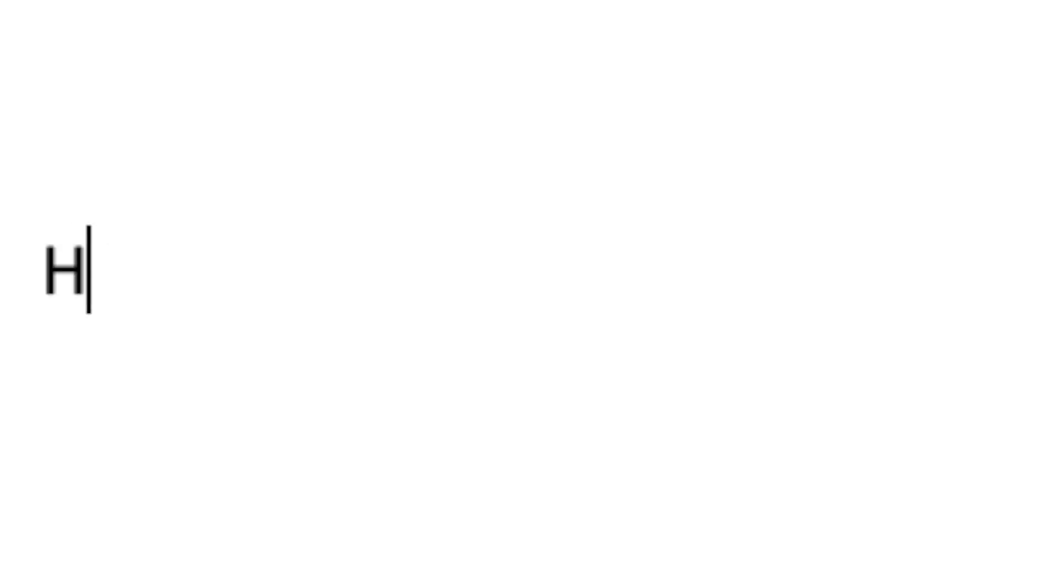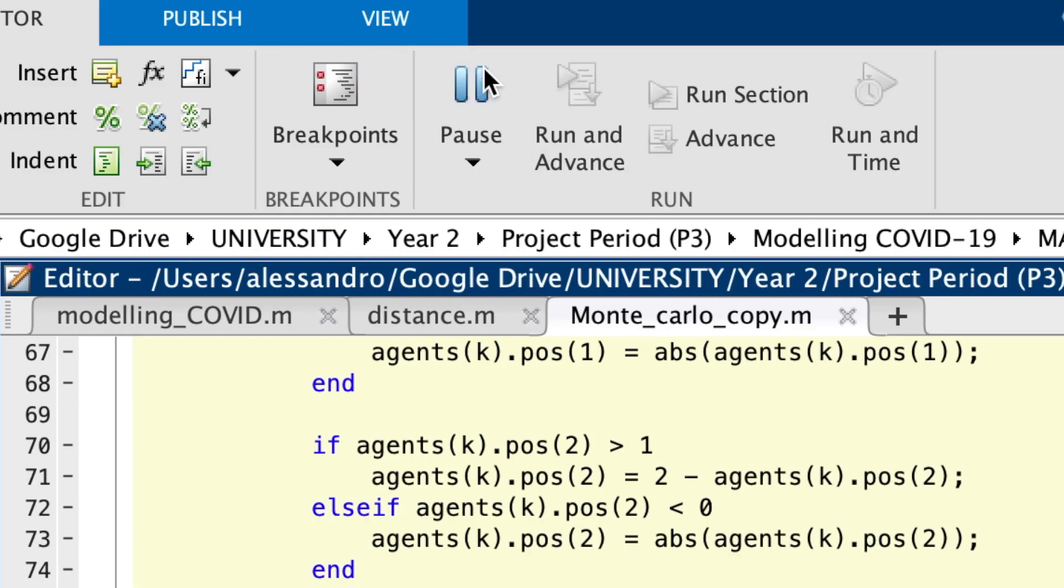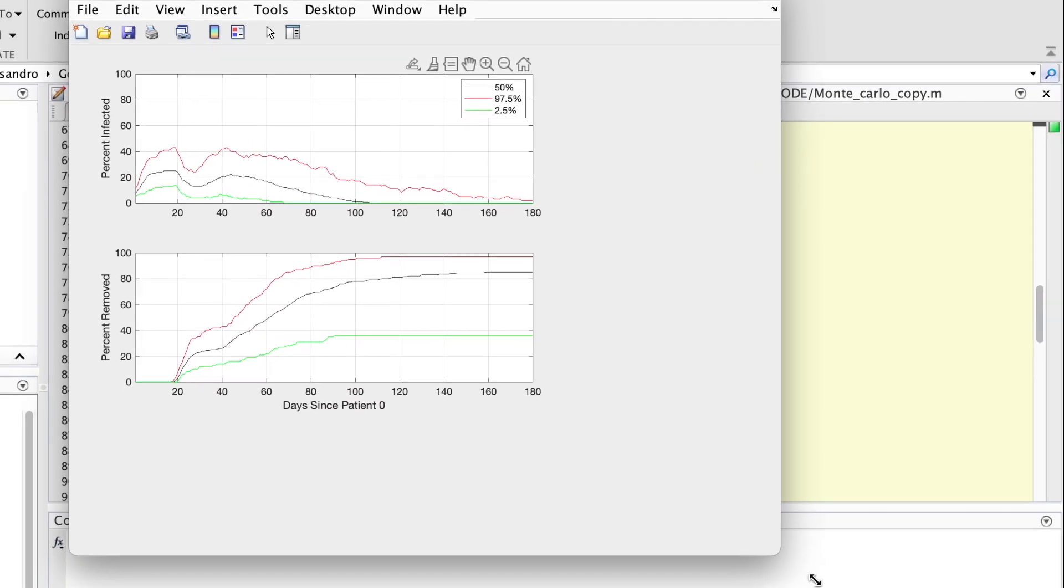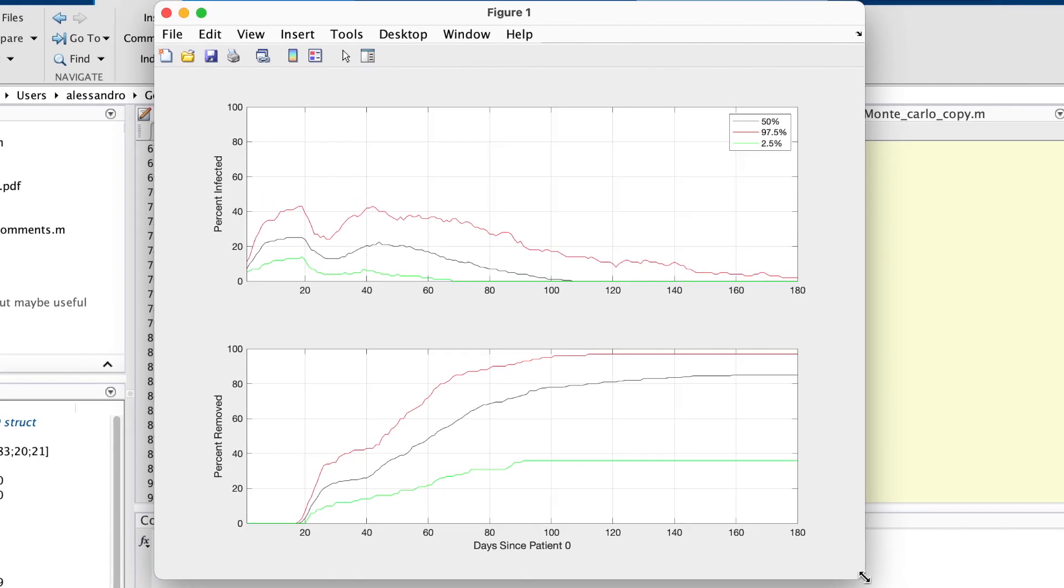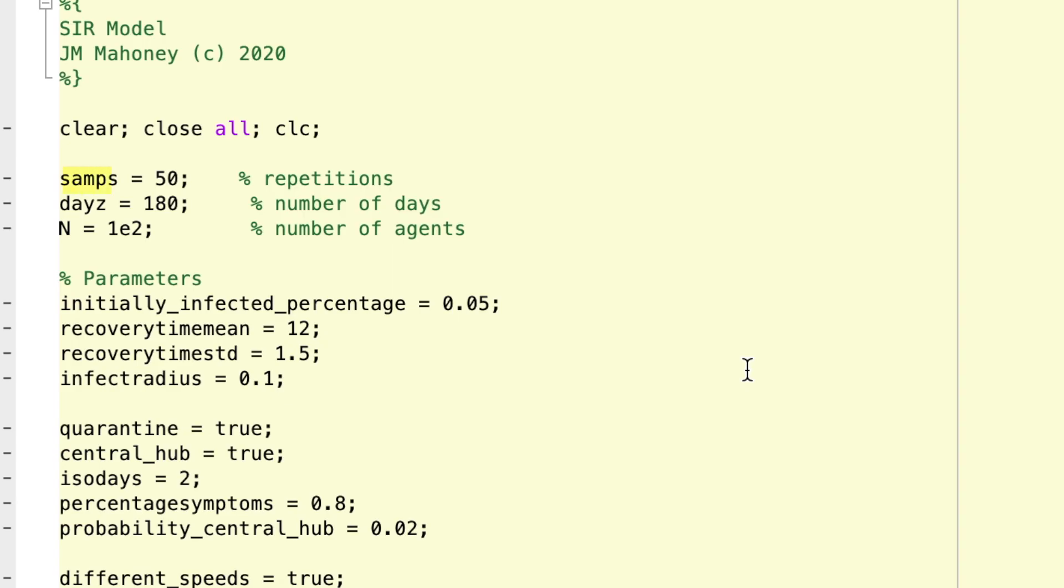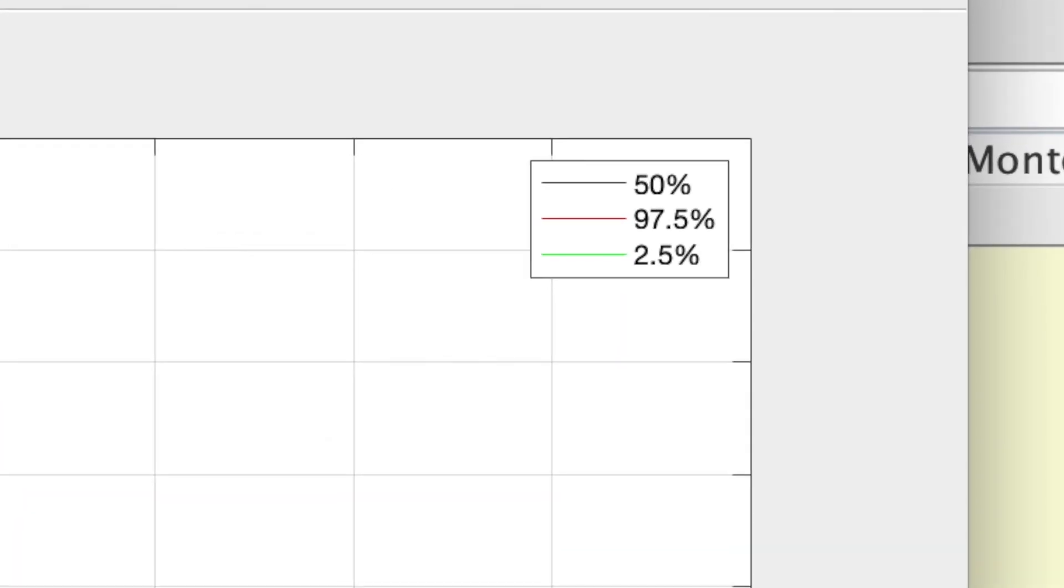So how does it become useful if every time we run it we will have different results? In order to account for that uncertainty, we conducted a probabilistic analysis. We ran something called a Monte Carlo simulation.